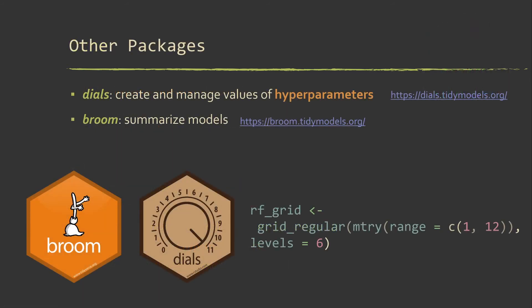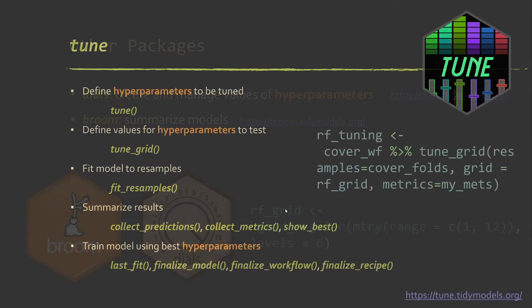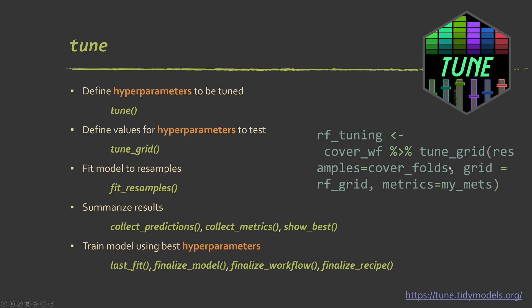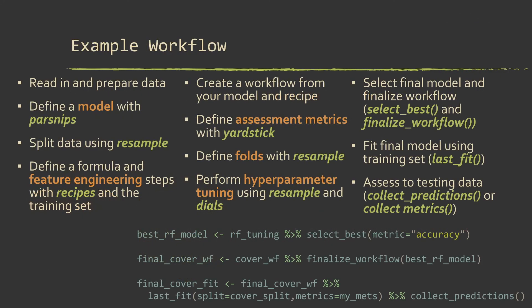There are a few other packages. For example, dials is used for managing and defining hyperparameters. So like what values you're going to test for different parameters. And then there's broom package, which I haven't really shown here or shown in the R examples. It's used for summarizing models and whatnot. This is an example for setting up a grid. So a regular grid. So basically we're going to tune the mtry parameter. We're going to use values from 1 to 12, and we're going to try six different levels. So that RF grid then can get fed into the tune grid function here to do the hyperparameter tuning.